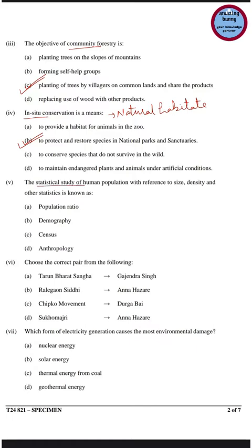The next question: the statistical study of human population with reference to size, density, and other statistics is known as demography. Population ratios describe the degree of balance between two elements of the population, for example males versus females, or children versus women of reproductive age. Census includes the total process of collecting, compiling, analyzing, evaluating, and publishing statistical data regarding population and housing and their geographical location. Anthropology is the study of the origin and development of human societies and culture.